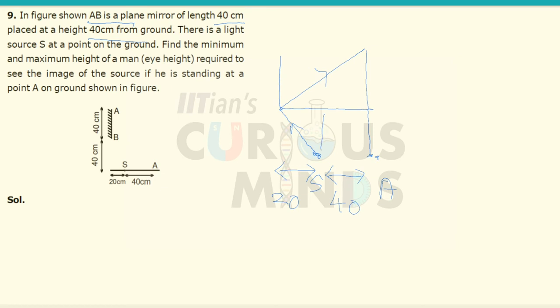Both these triangles are similar because angle of incidence is equal to angle of reflection. This angle is 90 degrees. So both these triangles are similar.